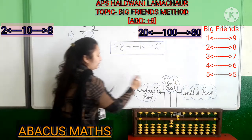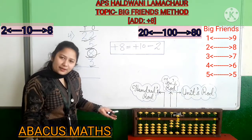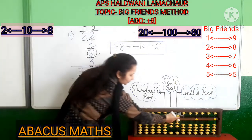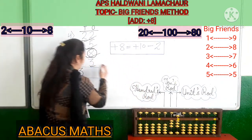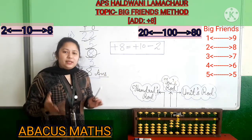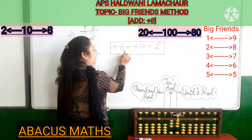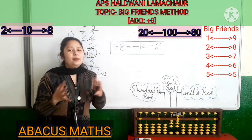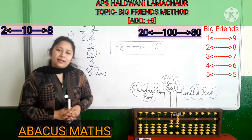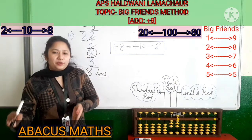Now add 3 in the ones slot: 1, 2, 3. Your sum is completed. See: 1, 2, 3 in the tens slot, and 5, 6, 7, 8 in the ones slot. So your answer is 38. The only thing to keep in mind is that 2 is the friend of 8 — they are the best friends in big friends. For adding 8, add 10 and subtract the friend which is 2.